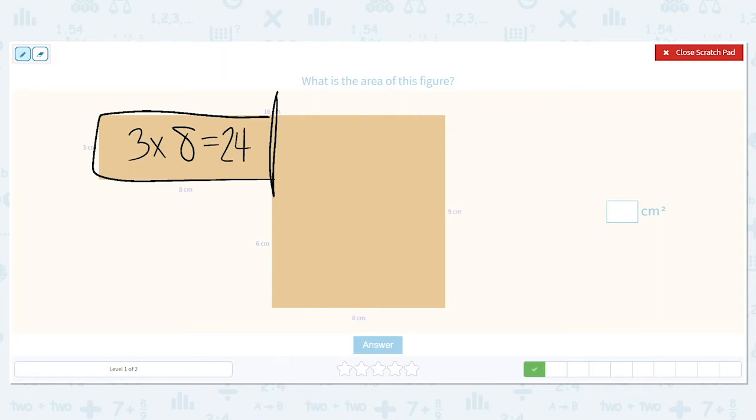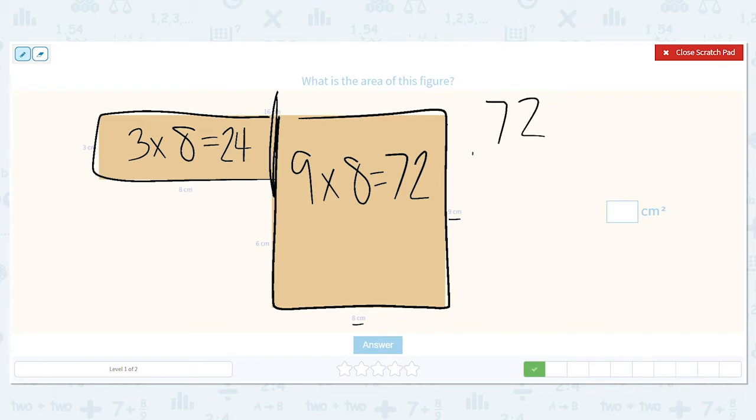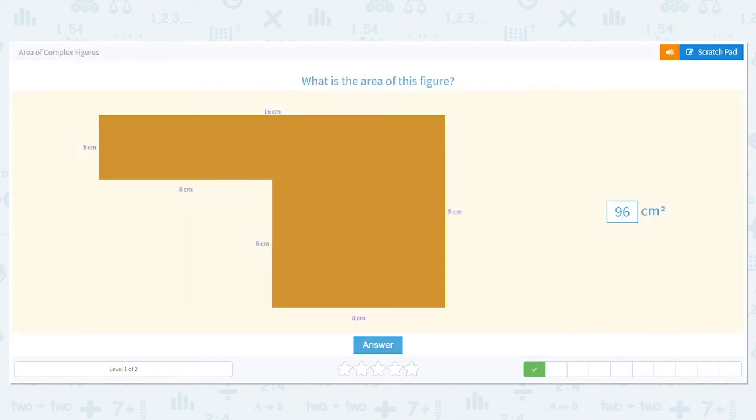That's the area of that figure. For my larger rectangle, that will be 9 times 8, and that equals 72. So now I add it, 72 plus 24. We're breaking it up into a simpler problem, two smaller problems, instead of trying to figure it out all at once. 7 plus 2 is 9. So the area of this total figure is 96 centimeters squared.